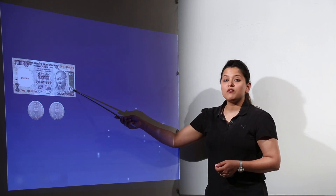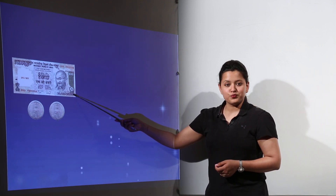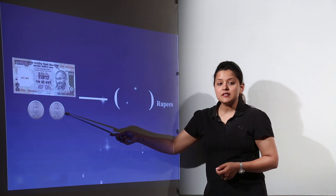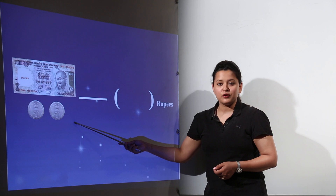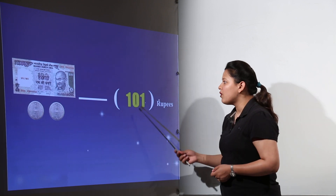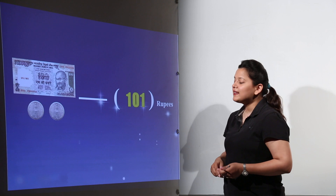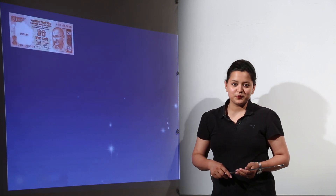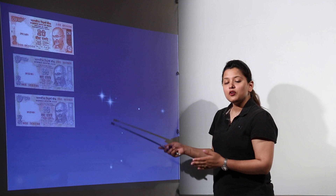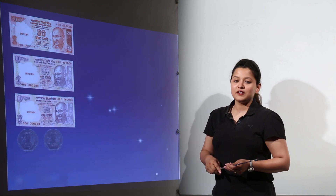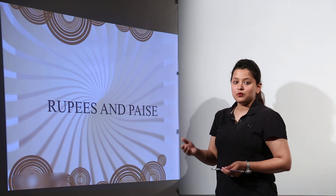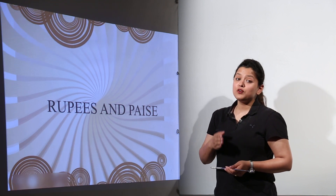Here, supposedly you have a 100 rupee note with you along with two 50 paisa coins. These 50 paisa coins together would make up 1 rupee. So in total you have the value of 100 plus 1 rupee, that is 101 rupees with you. Similarly there are different denominations possible for the money that you can have — different notes, different value notes, different value coins.